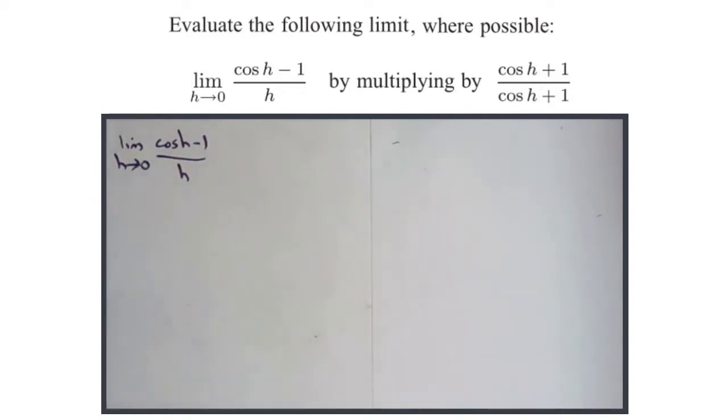It's told us what to do. We need to do this by multiplying by cos h plus 1 over cos h plus 1. So just before we do that, it's probably good to say why we're doing such a thing. Why do we need to?